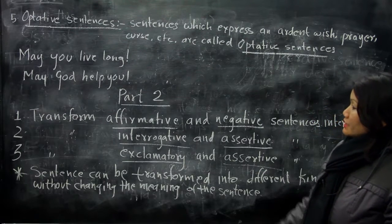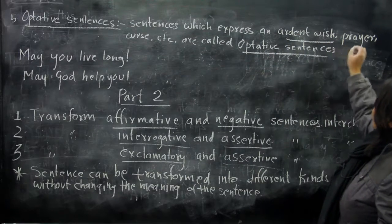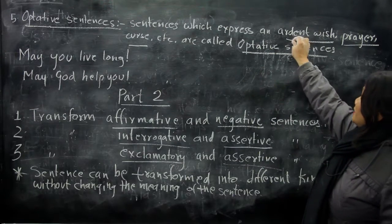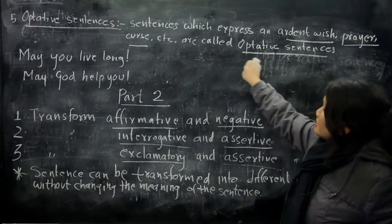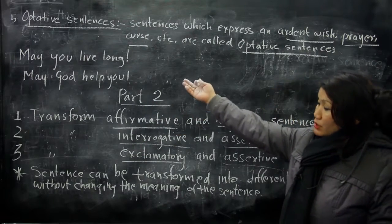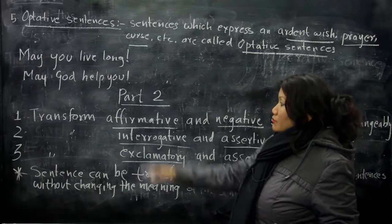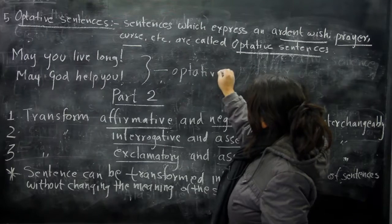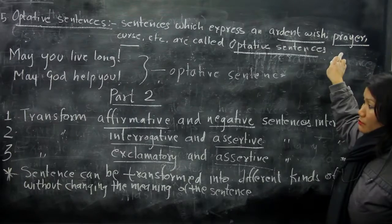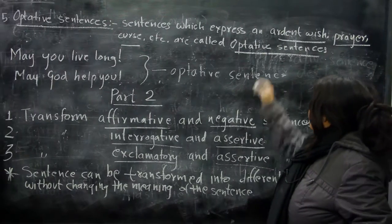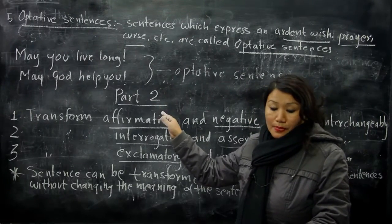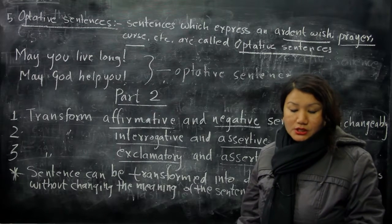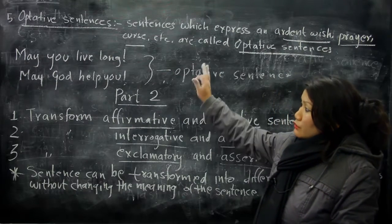The fifth kind is the optative sentence. Sentences which express an ardent wish, prayer, or curse are called optative sentences. For example: 'May you live long!' and 'May God help you!' These are called optative sentences because they contain a wish, prayer, or sometimes a curse. So in Part 1, we have seen five types of sentences: assertive or declarative, interrogative, imperative, exclamatory, and optative.